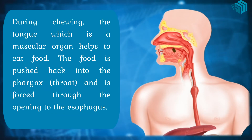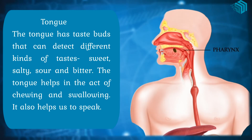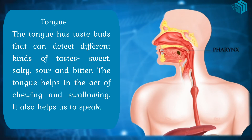During chewing, the tongue, which is a muscular organ, helps to move food. The food is pushed back into the throat and forced through the opening to the esophagus. The tongue has taste buds that can detect different kinds of tastes: sweet, salty, sour and bitter. The tongue helps in the act of chewing and swallowing, and also helps us to speak.